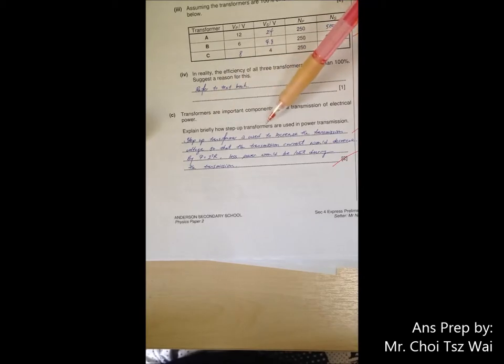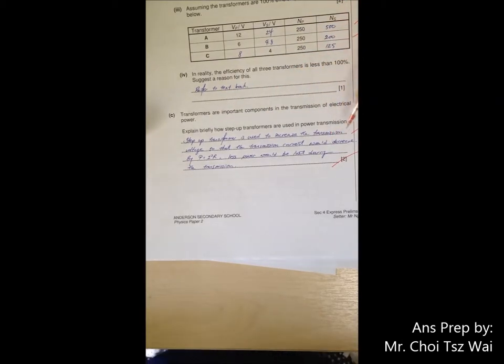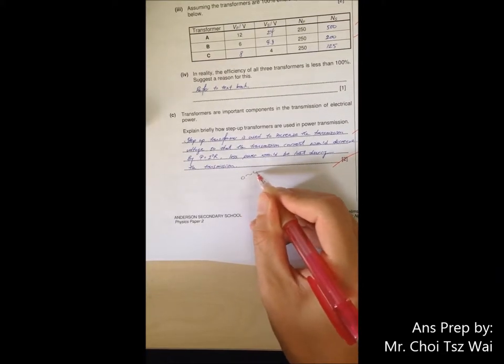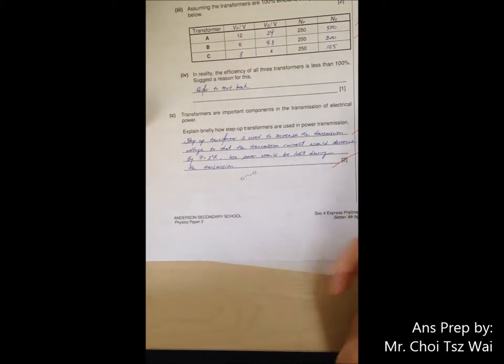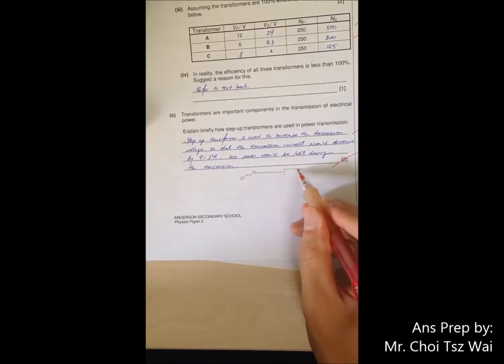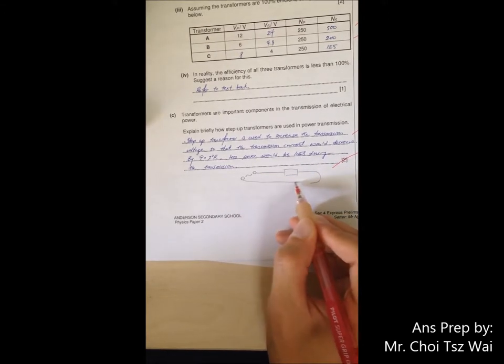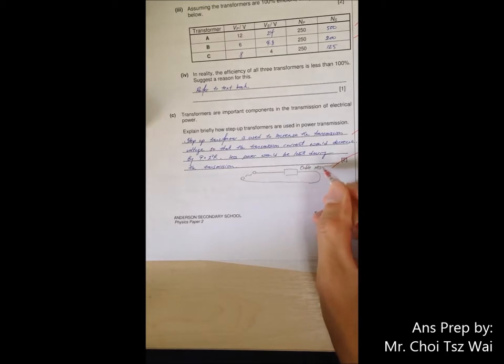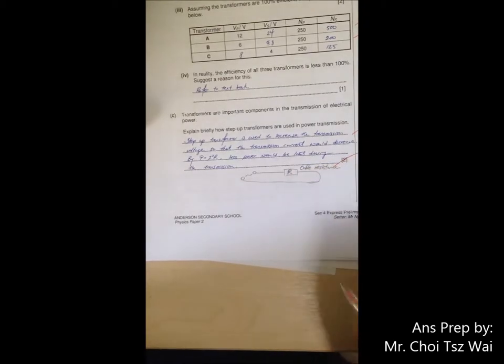Part C. Why is it used in power transmission? Again, this one is from your textbook. What you can imagine is that your power supply from the power station, let's say it's an AC supply, is going in a cable. The cable will have some resistance. Let's imagine it just form a loop like that. This is your cable resistance.